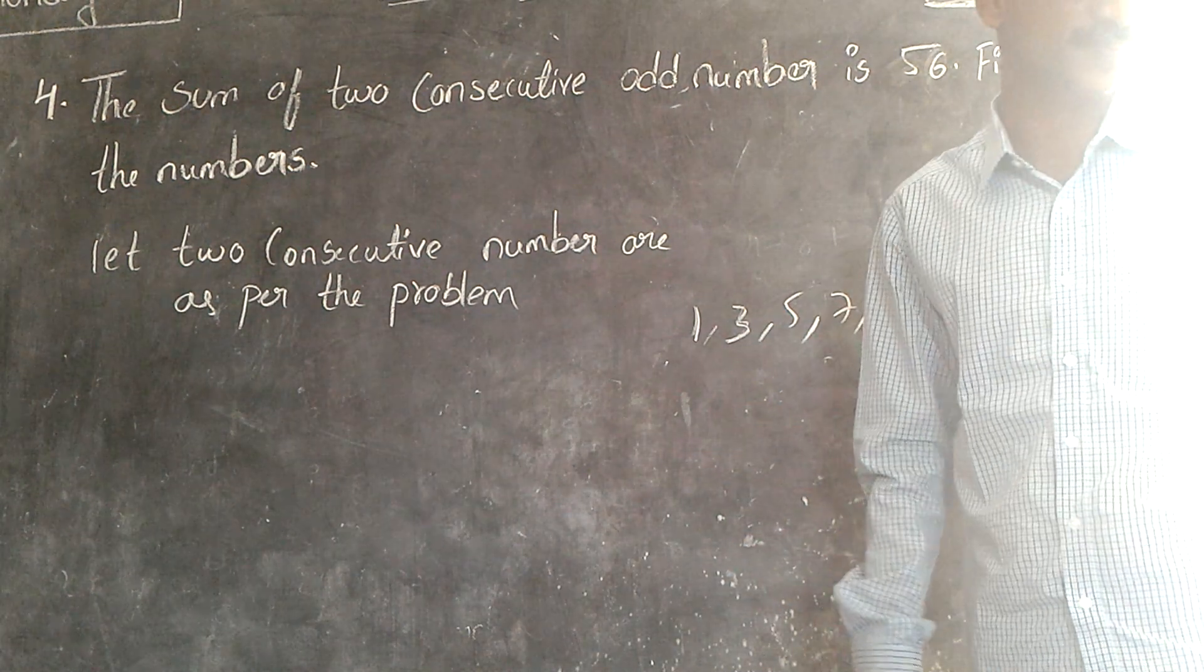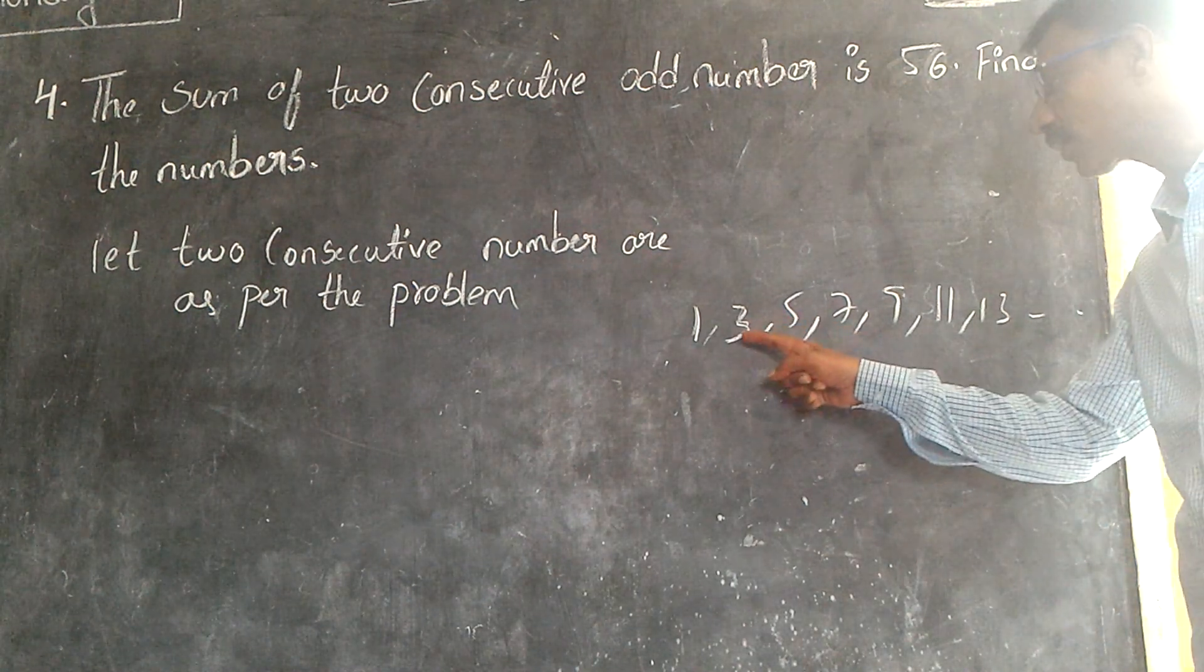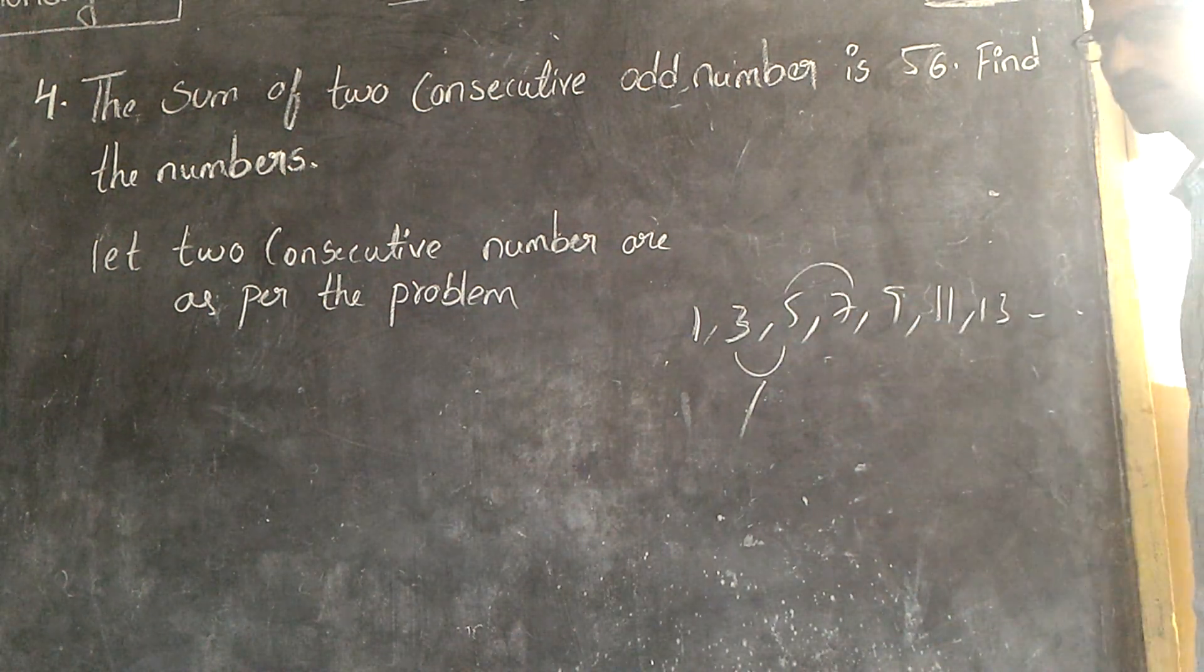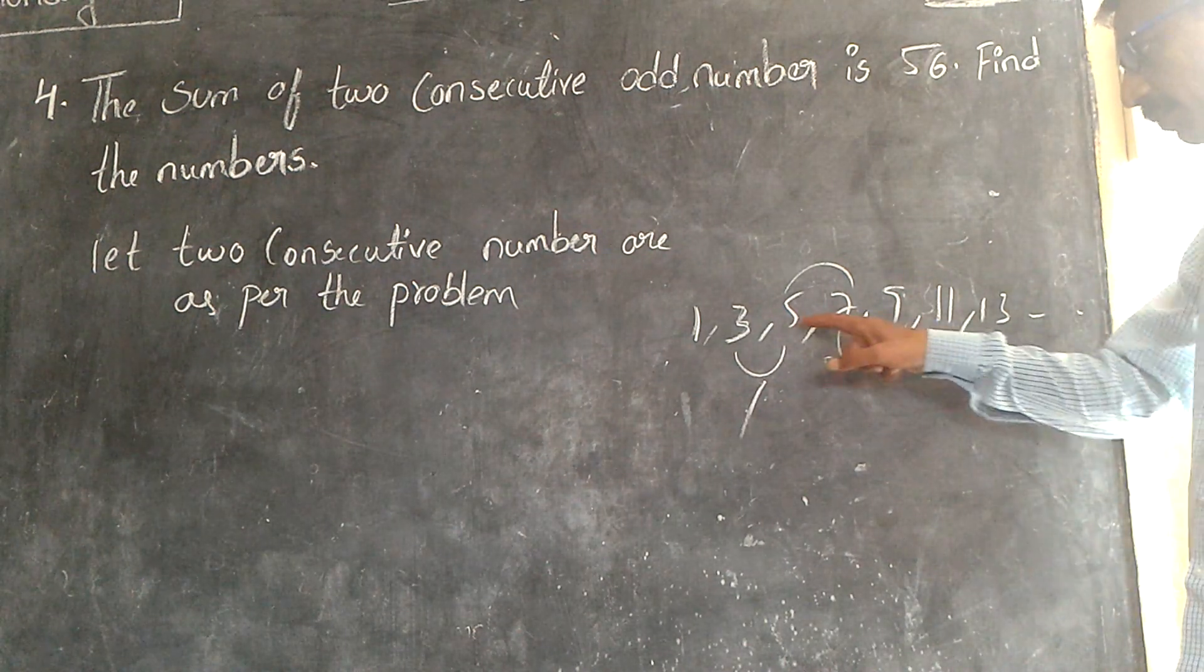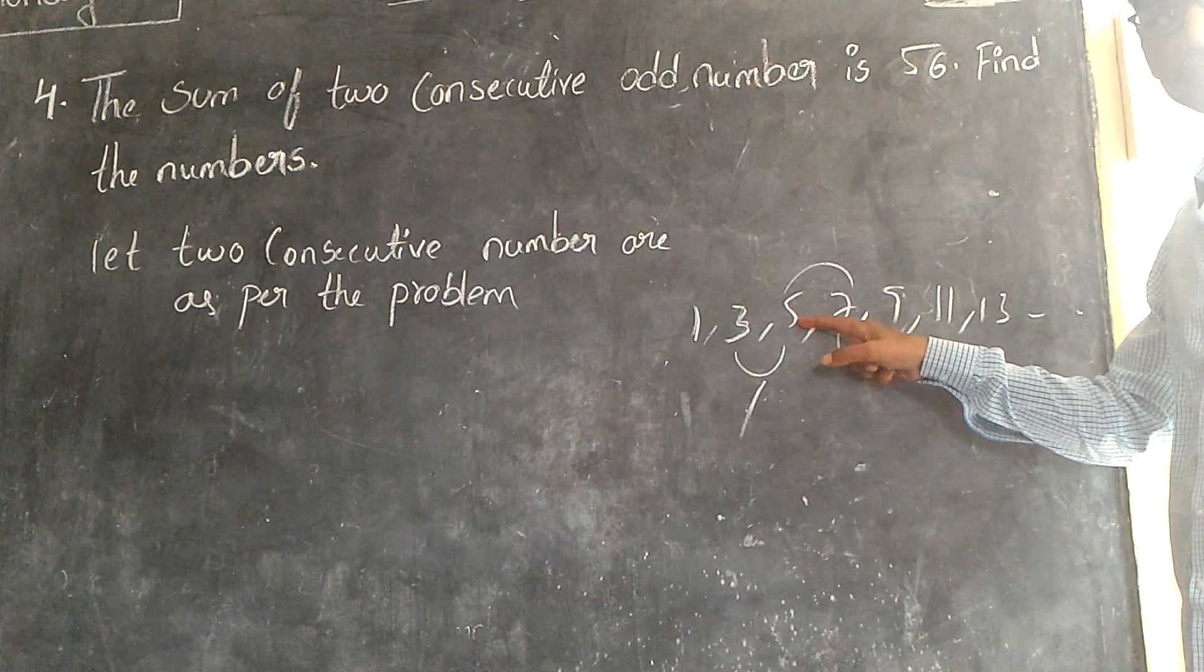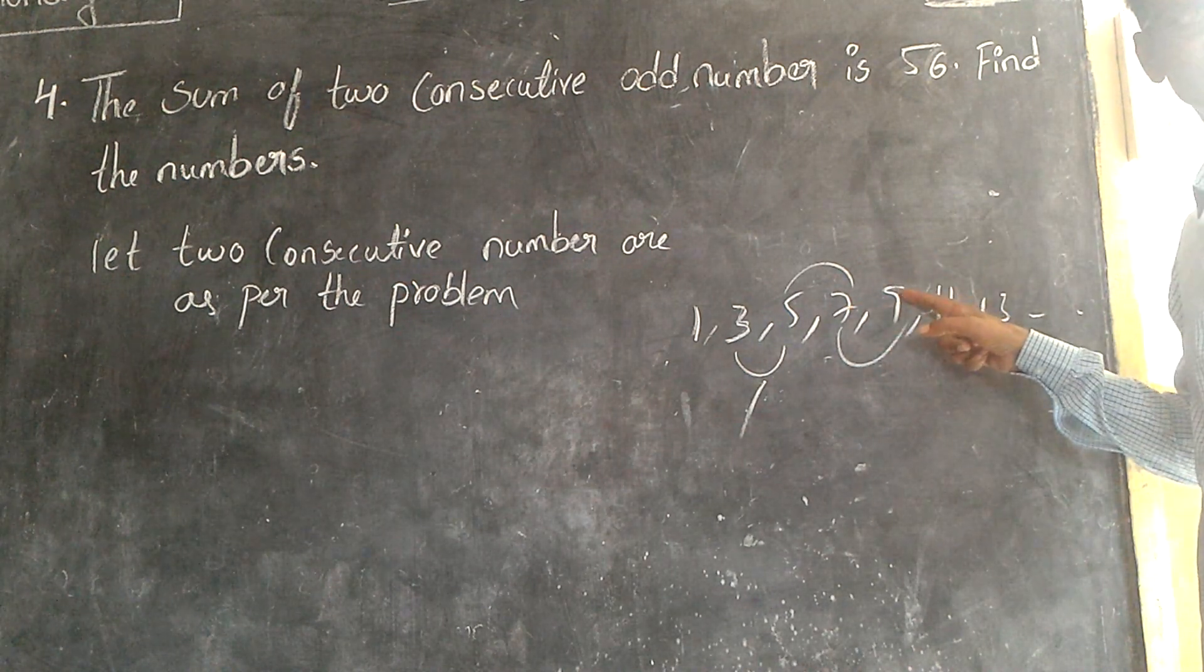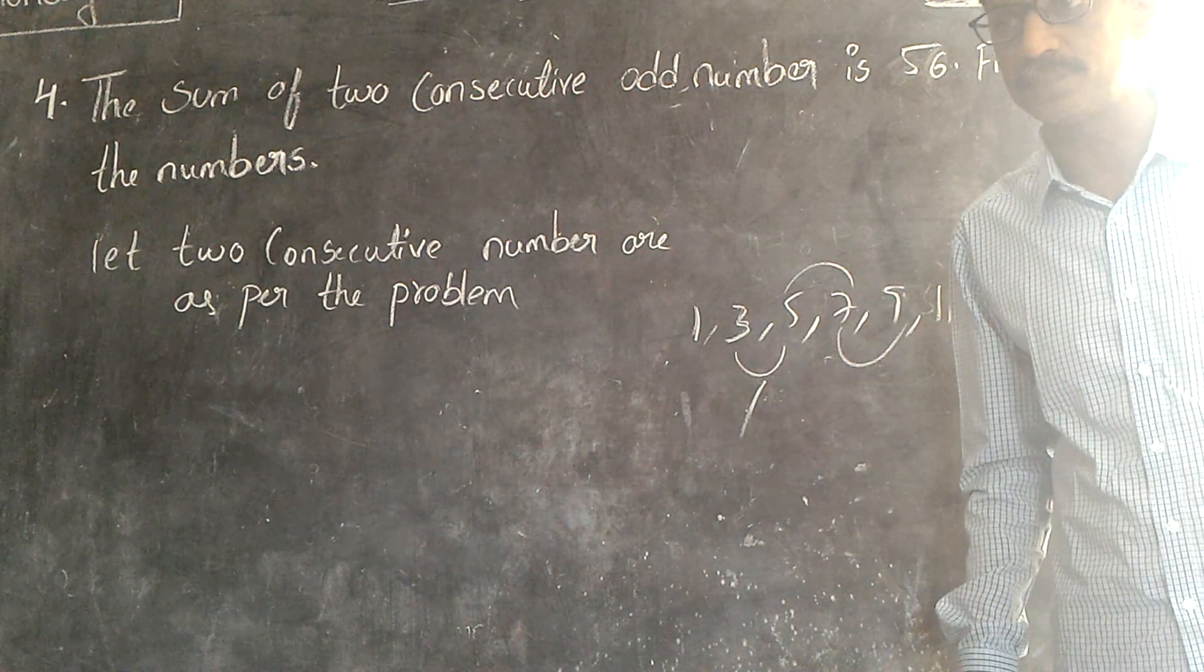These are all odd numbers. Consecutive odd numbers are here. You can call it three comma five are consecutive odd numbers, or five seven, or seven or nine. So what is the difference between these two numbers? By adding two we are getting this one. By adding two we get the seven. By adding two we get nine. That means the difference between two consecutive odd numbers is two.